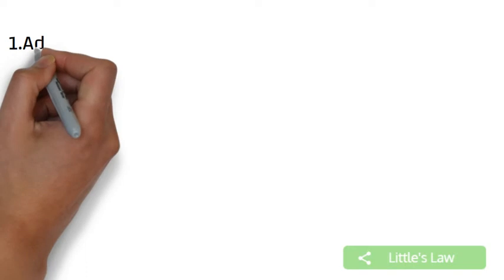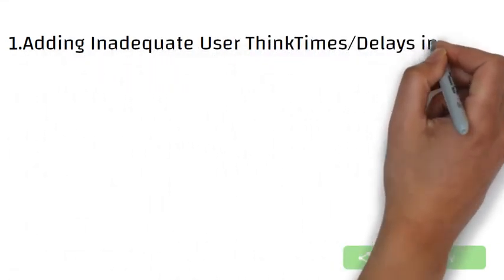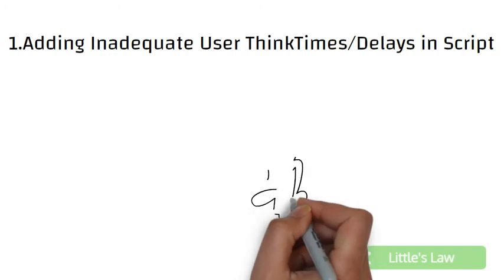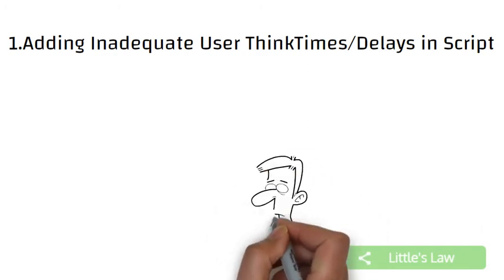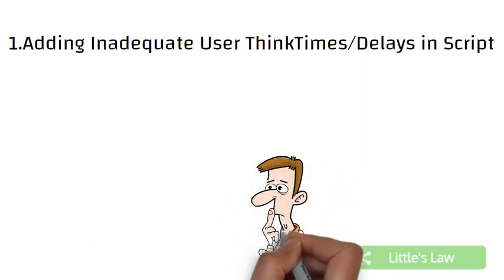Let's start with the first mistake. The first mistake every beginner would do is having inadequate user think time in scripts, or forgetting to add think time. Performance testers hit the application with hundreds or thousands of requests per second without any think time, and then wonder why the response time is so high.